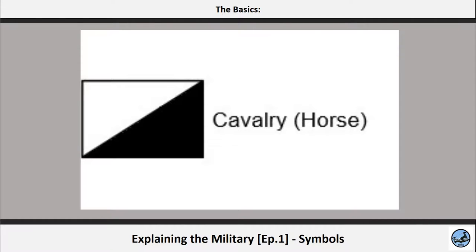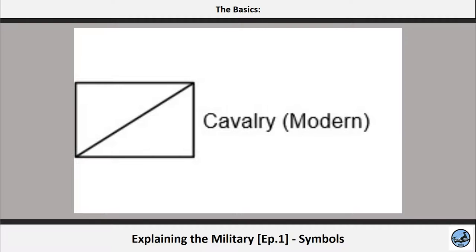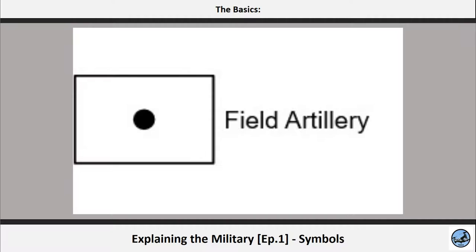The trio of units in the Napoleonic era was completed by the cavalry and by the artillery. The cavalry is represented by a single line instead of the X shape of the infantry, with the lower triangle being colored usually black, representing the fur of the horse. Modern reconnaissance units are similar, but the triangle is without colors, as the unit is without horses. Artillery has a simple dot in the middle of the rectangle — basically like looking at the gun from the front: the dot is the barrel and the rest is the gun shield.